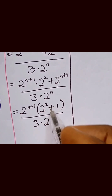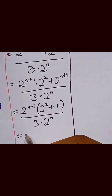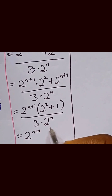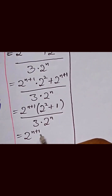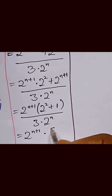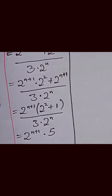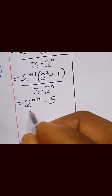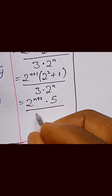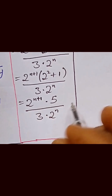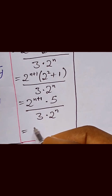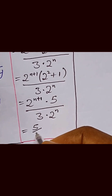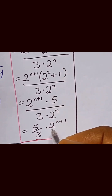This gives us 2 raised to power n plus 1, multiplied by 5 over 3, multiplied by 2 raised to power n. So this can be written as equal to 5 over 3, multiplied by 2 raised to power n plus 1, times 1 over 2 raised to power n.